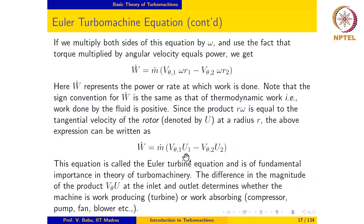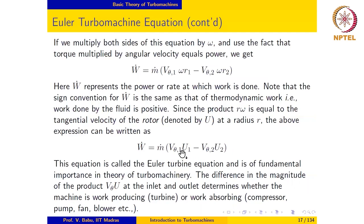The product Vθ·U, or the difference between Vθ·U at inlet and outlet, determines whether the machine is work-producing or work-absorbing. The sign convention for power W-dot is the same as in thermodynamics: if the right-hand side is positive, the machine is a turbine; if negative, it is a compressor, pump, or blower. This is consistent with the thermodynamic sign convention for work.